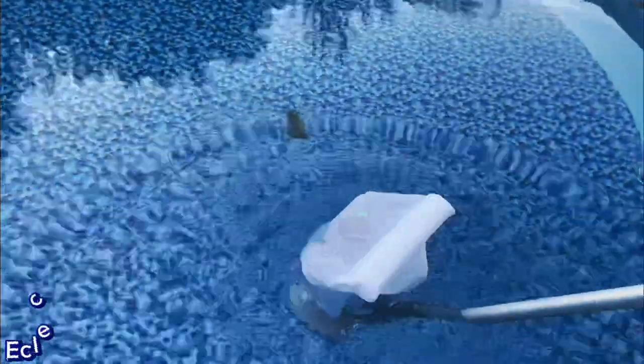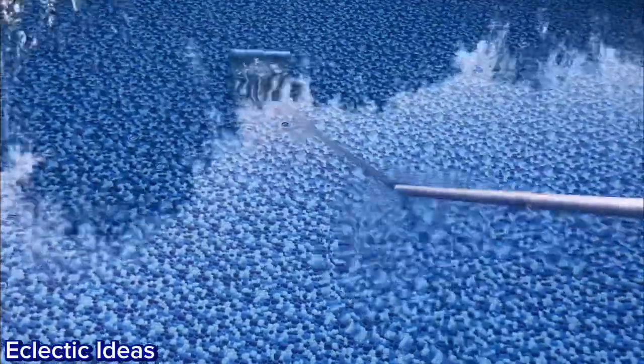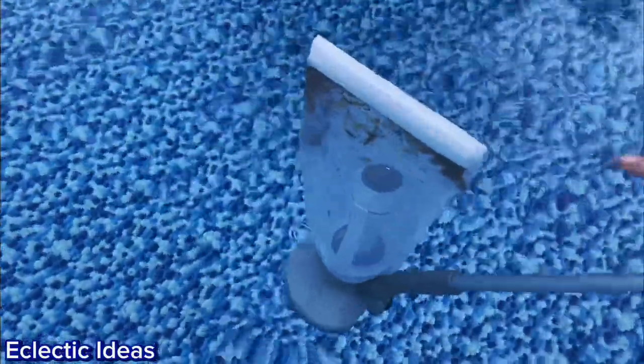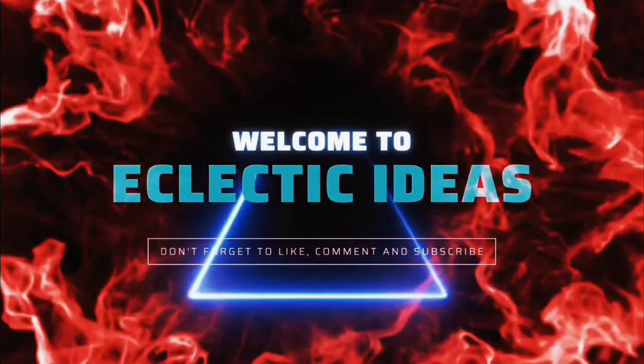It's the maiden voyage of the Kokido 200 rechargeable cordless leaf vac. It's got a seven-foot pole, a 30-minute runtime, and a flotation device for its leaf bag. Welcome to Eclectic Ideas.